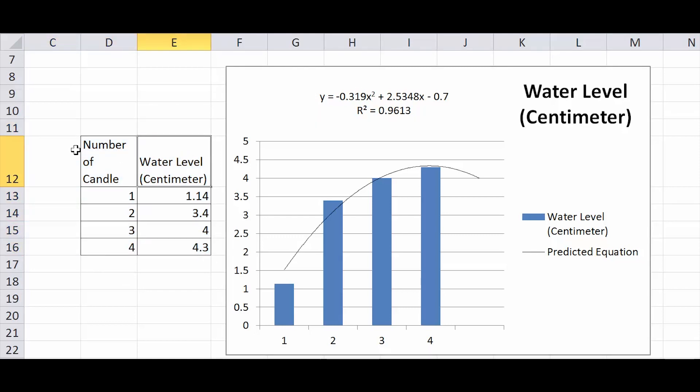Here's the data table with the water level depends on the number of the candle. From here, you will have a second order equation. And we also have a polynomial equation. It's not a linear equation, so I decide to conduct an experiment.